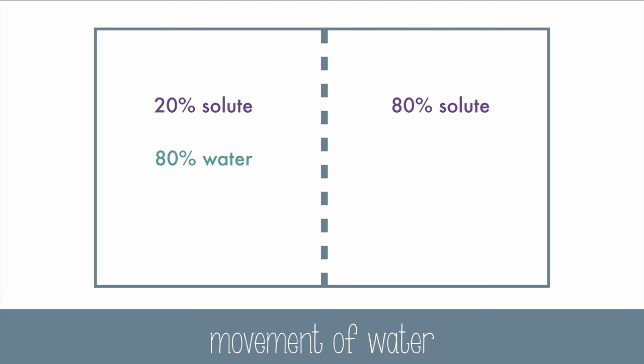Subtract from 100 and you'll get 80% water on the left side. Subtract 80 from 100 and you get 20% on the right. Water moves from high concentrations of water to low concentrations of water, so we'll move from the left to the right in this case. Again, the movement is from a hypotonic solution to a hypertonic solution.